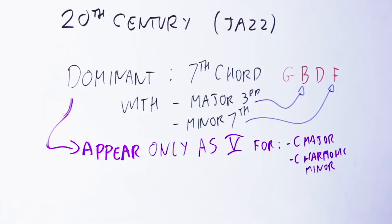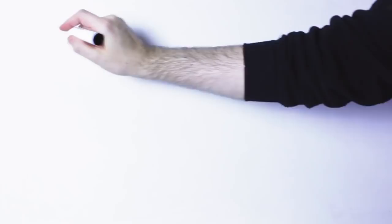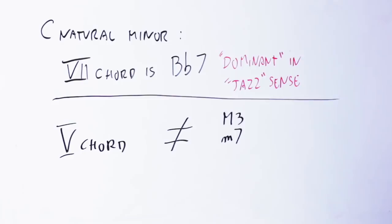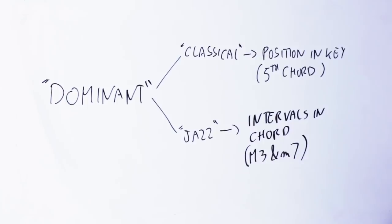But if you start, for instance, to use natural minor to get your chords, then the seventh chord in this key, so the seventh chord in the key of C minor, is B flat seventh, a dominant chord in the jazz sense, if you want. So we can see that the two definitions of dominant chord are not exactly the same.